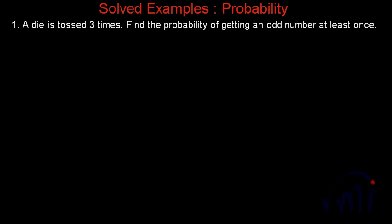Hi, so here we have one more video on probability. In this video we have three different types of problems. The first problem is: a die is tossed three times — find the probability of getting an odd number at least once.